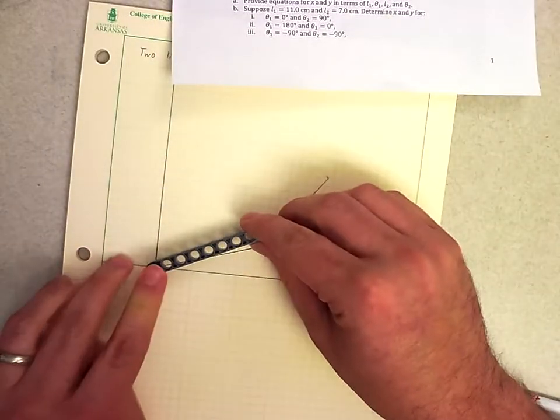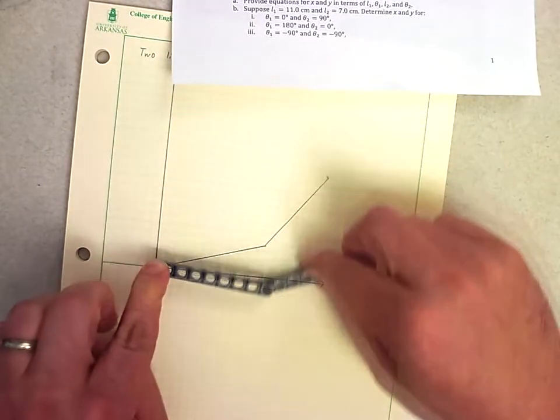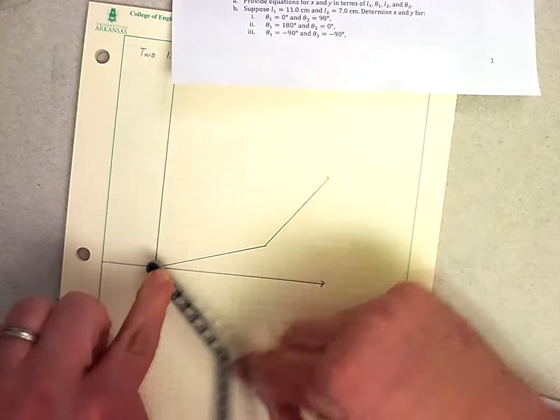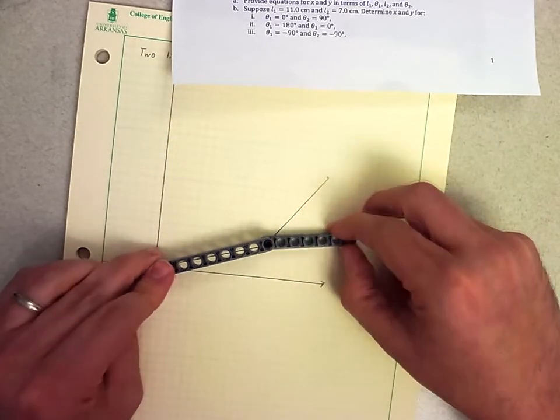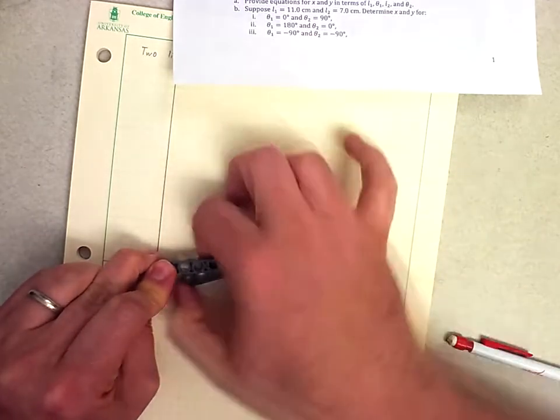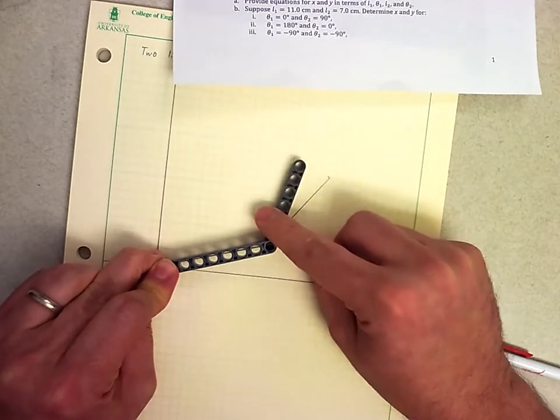So basically what we have, we have an anchor there. Our first one can rotate wherever it wants to go. It can go and then we lock it at a point and then this one can rotate wherever it wants to go so that we can get to any point that we want to get to.